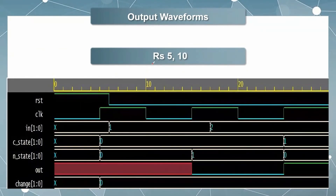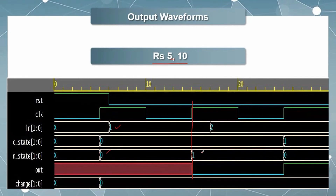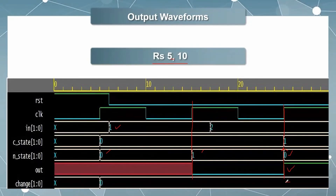Let's move on to the second simulation result: adding rupees 5 first and then 10 second. The point of observation starts from here. Initially the input is 1 for rupees 5, so the next state changes from state 0 to state 1 and the output and change are 0. At the second positive edge, adding rupees 10 means a total of rupees 15 is present in the vending machine — enough for the product. So the next state changes from state 1 to state 0, output return should be 1, and the change is 0 at all times.